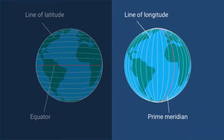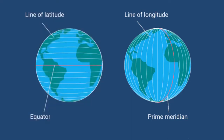Longitudes help in defining date and time on the earth. They extend from 180 degrees east to 180 degrees west of the prime meridian. There are 360 longitudes in total. There is a time gap of four minutes between two longitudes. Together, latitudes and longitudes help in locating a place and the time of that place.